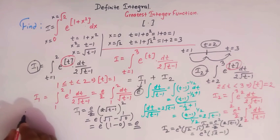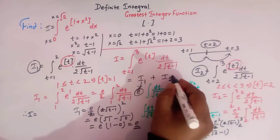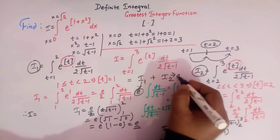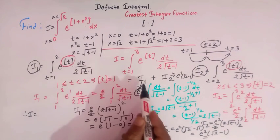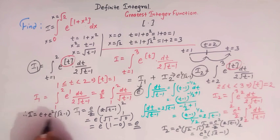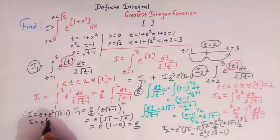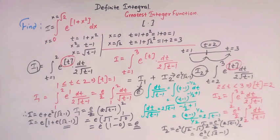The final value of I equals I1 plus I2, where I1 equals e and I2 equals e squared times (square root of 2 minus 1). So I equals e plus e squared times (square root of 2 minus 1). Or taking e as common, we can write it as e times (1 plus e times (square root of 2 minus 1)). This is the value of the given integral.